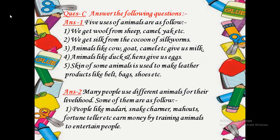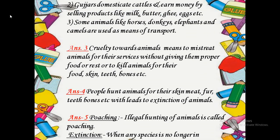Question 2: How do people use animals for their livelihood? Answer: Many people use different animals for their livelihood. (1) People like Madari, snake charmers, mahouts, and fortune tellers earn money by training animals to entertain people. (2) Gujars domesticate cattle and earn money by selling products like milk, butter, ghee, eggs, etc. (3) Some animals like horses, donkeys, elephants, and camels are used as means of transport. Question 3: What do you understand by cruelty towards animals? Answer: Cruelty towards animals means to mistreat animals for their services without giving them proper food or rest, or to kill animals for their food, skin, teeth, bones, etc.